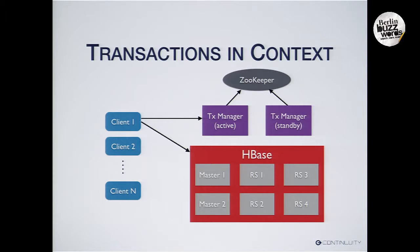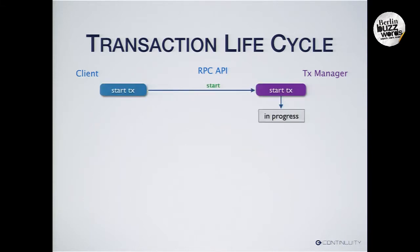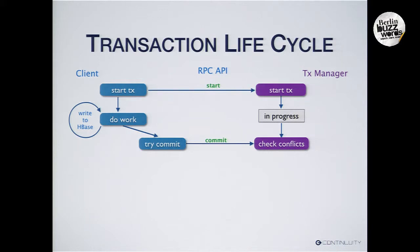Once the client has obtained a transaction from the transaction manager, it can use that to write to HBase. The life cycle of a transaction: the client calls the transaction manager to start a transaction. The transaction manager returns a transaction ID and remembers that this transaction is now in progress. The client then does all its work autonomously without needing to talk to the transaction manager. When it's done, it talks to the transaction manager again and says: I want to commit, here are the changes I've made and the keys I've written to.